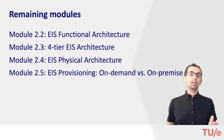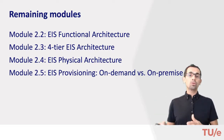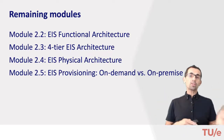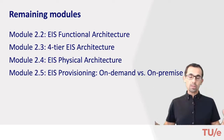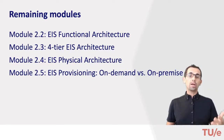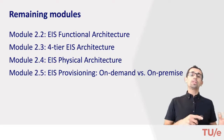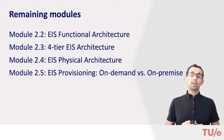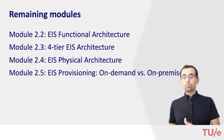In the second module of this course, we'll talk about the functional architecture of enterprise systems — the column style. We'll look into the functional modules of commonly used enterprise systems like ERP, CRM (customer relationship management), or supply chain management systems. In the third module, we'll look into the layered architecture style and discuss the four-tier enterprise system architecture.